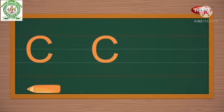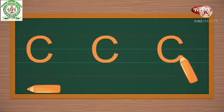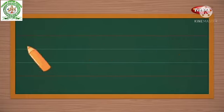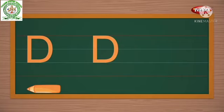This is C. Now we will write D: standing line and a curve makes D.